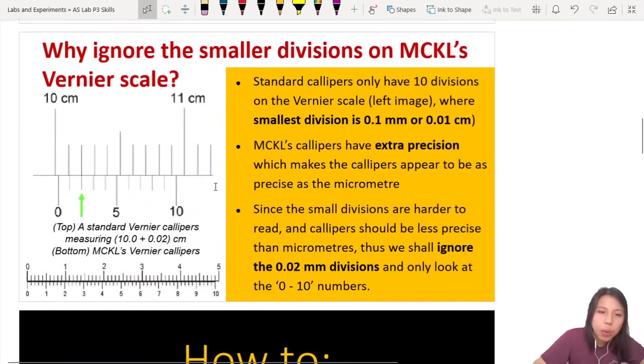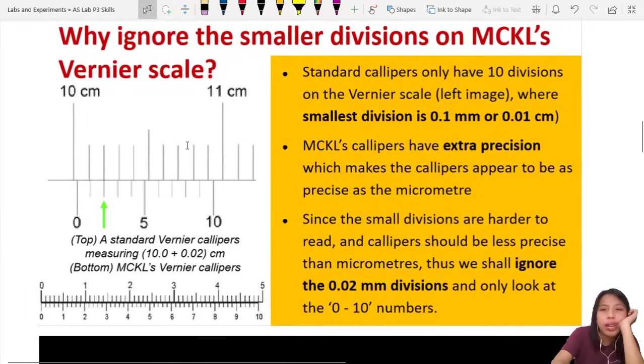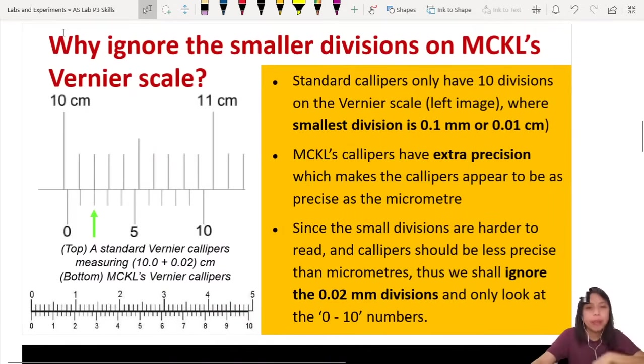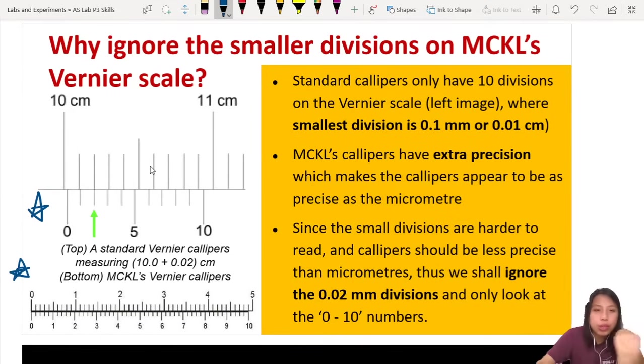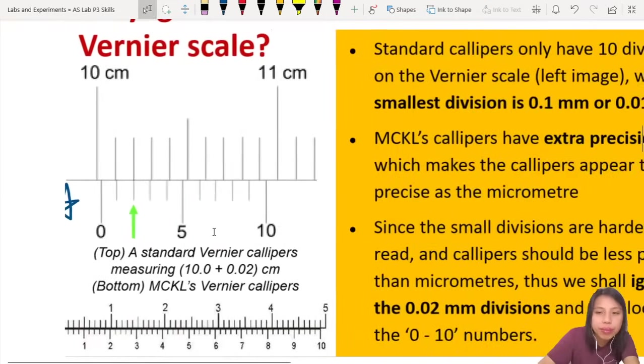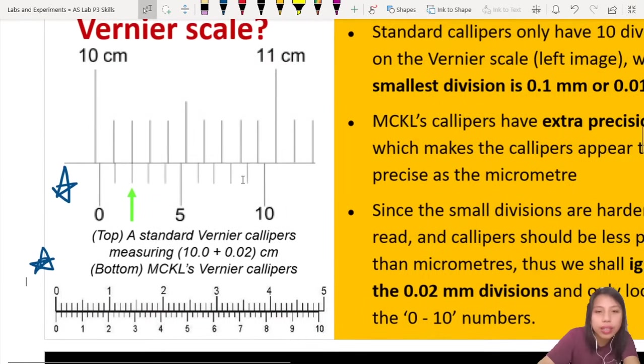Now comes the part. Why ignore the smaller division of MCKL scale? A lot of people ask this. Why our MCKL must ignore? Okay. Because, if you look on the left side, this picture, this is how normal vernier calipers look like. You see in textbook, if you see in past year, they look like this. Our MCKL one is the one on the bottom, down here. Do you see the difference between both?